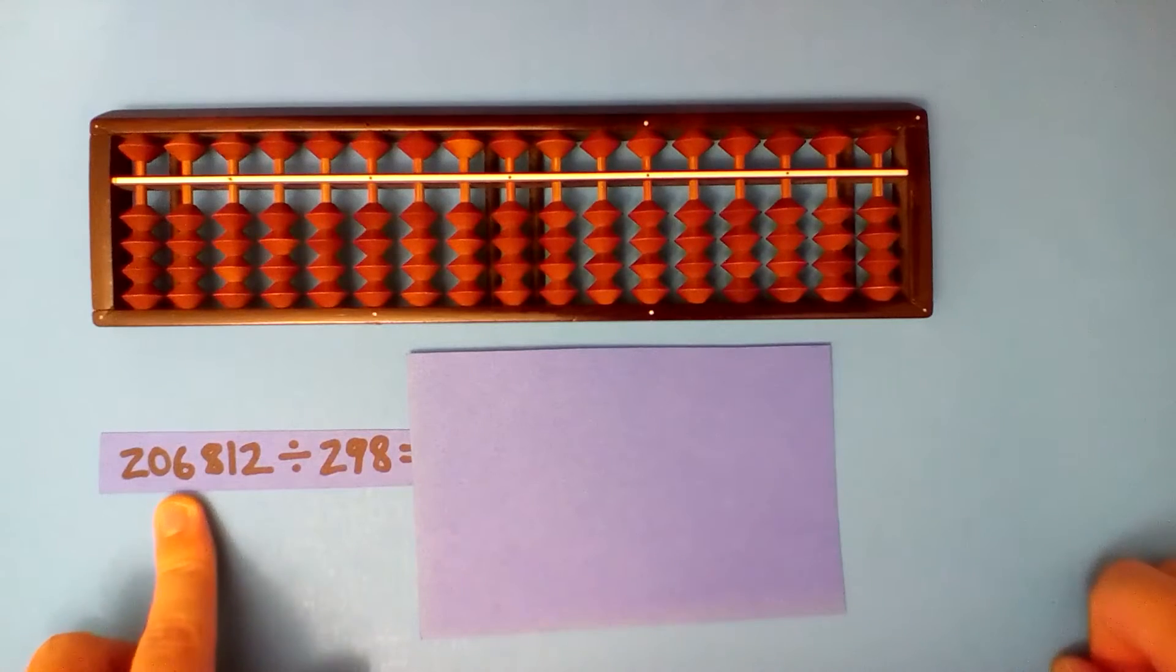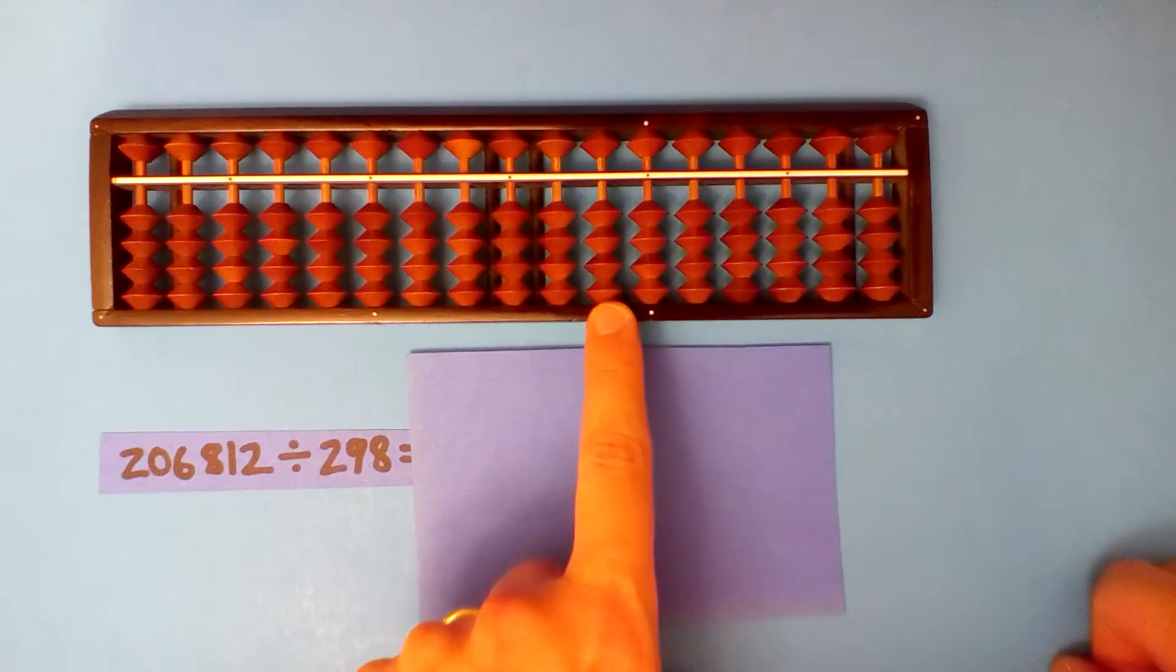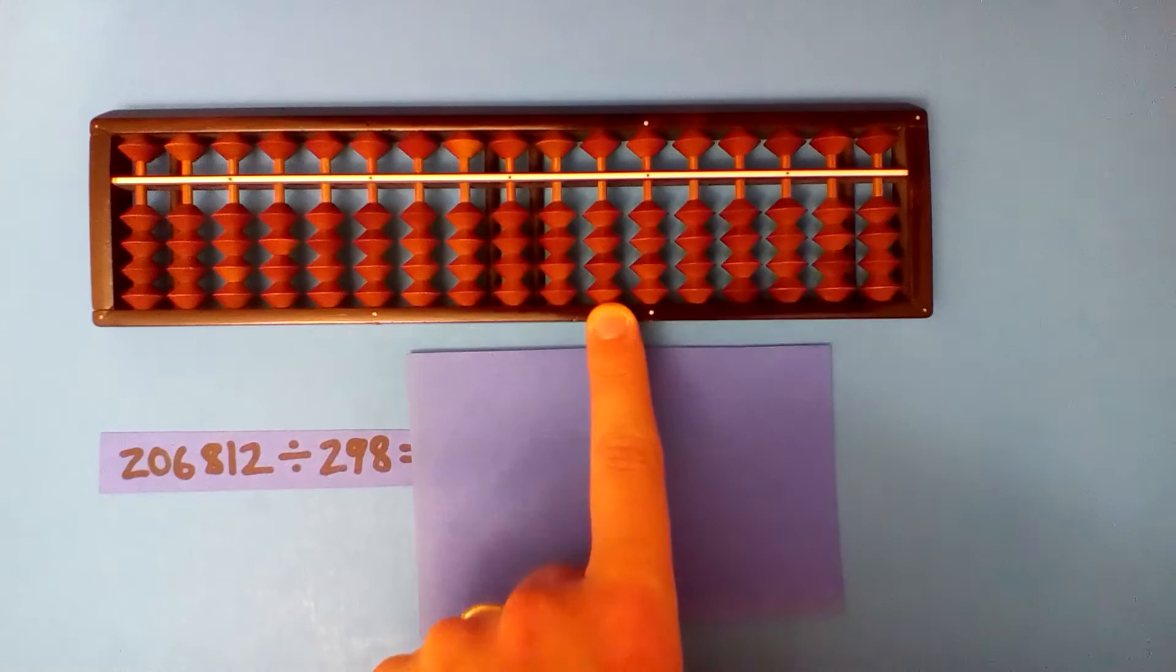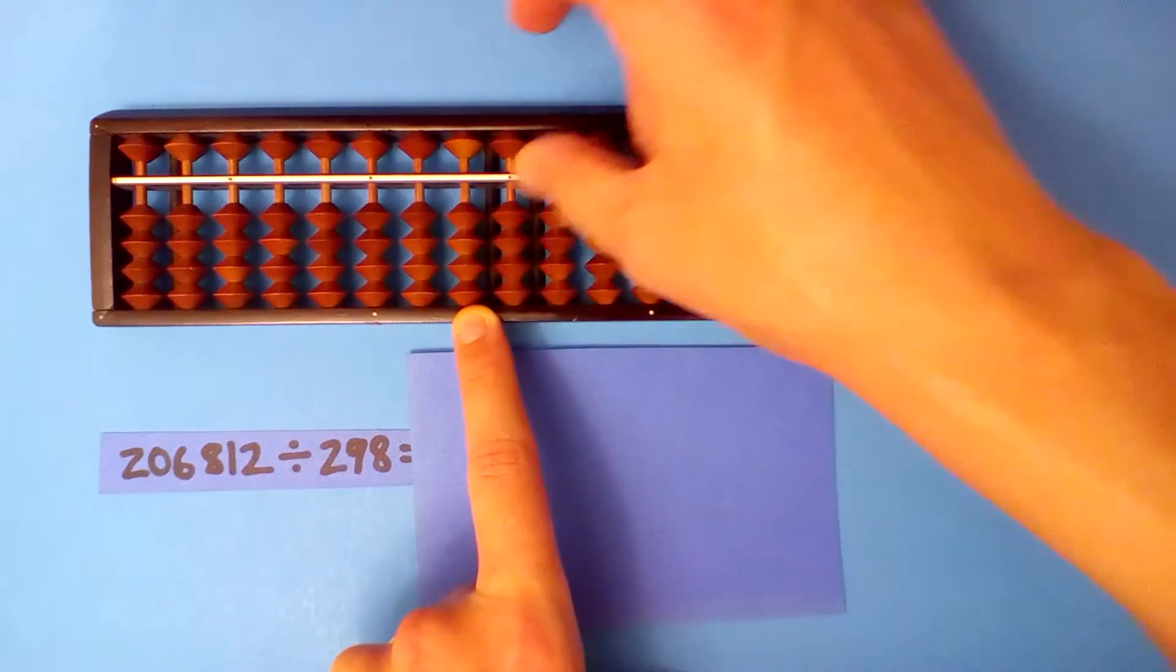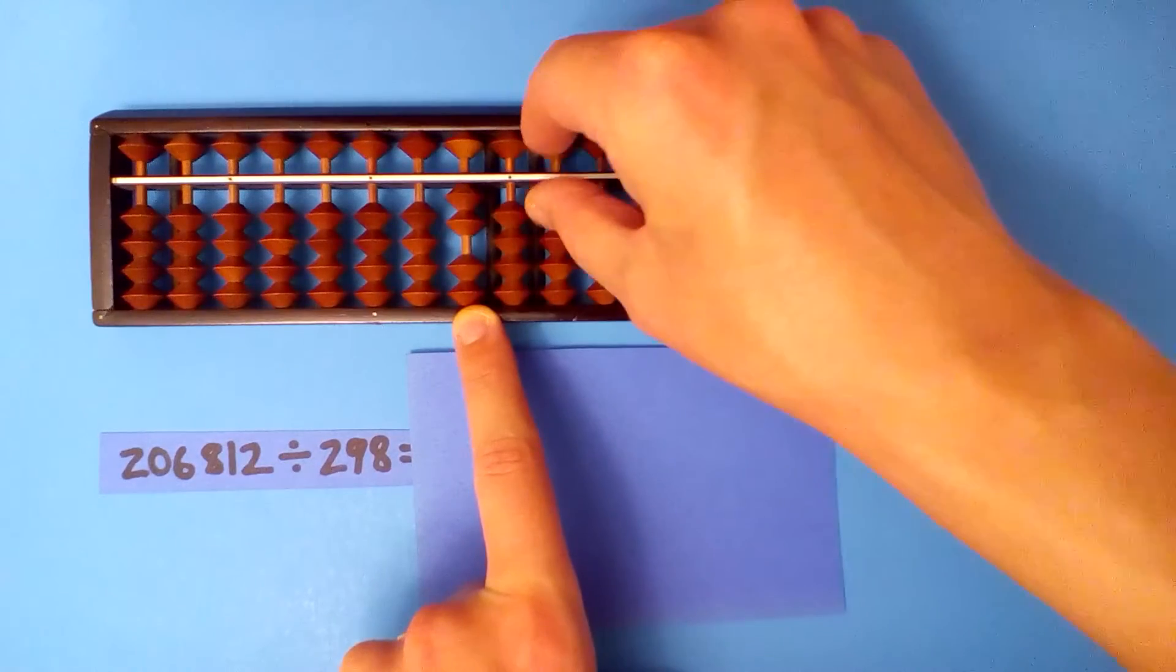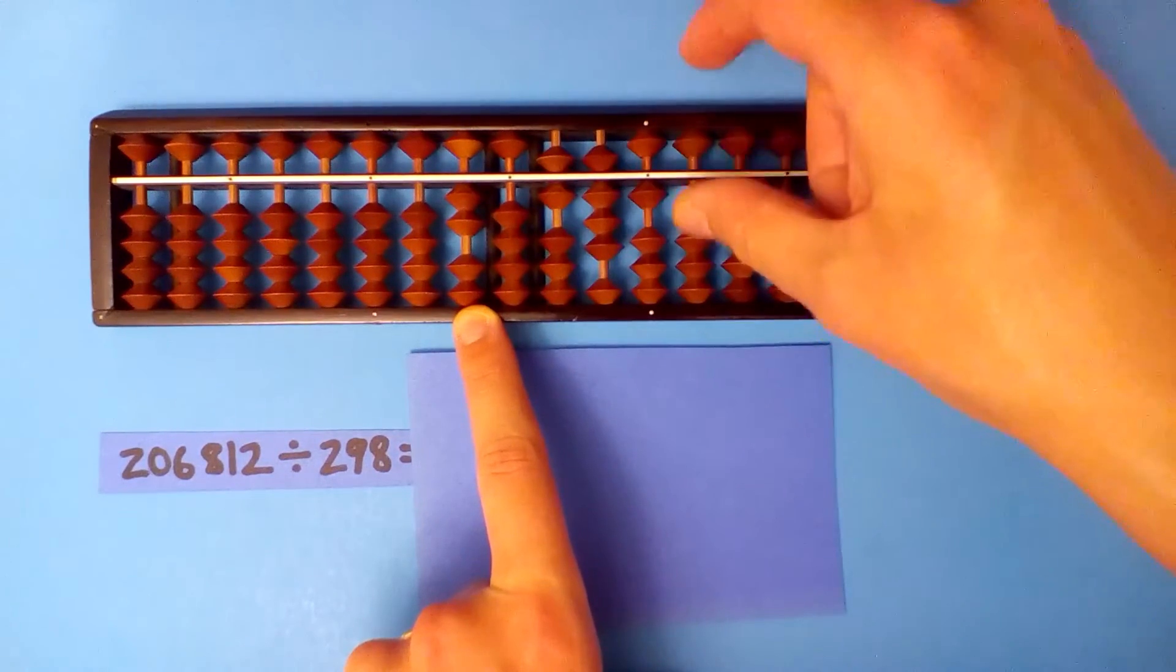We'll start with this one. So we always start on the hundredths, but in this case the dividend has three more digits than the divisor, so we move over one, two, three.